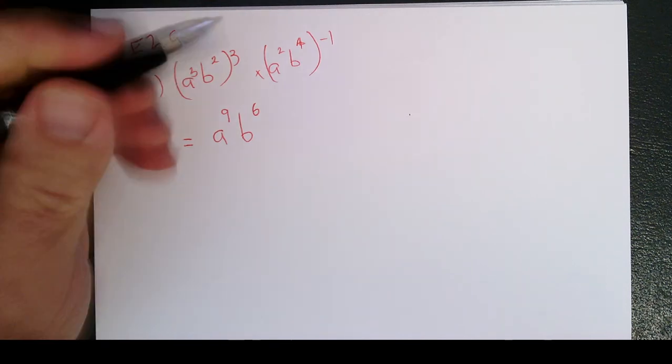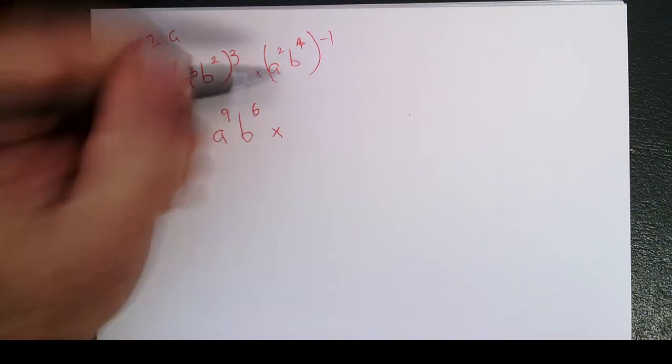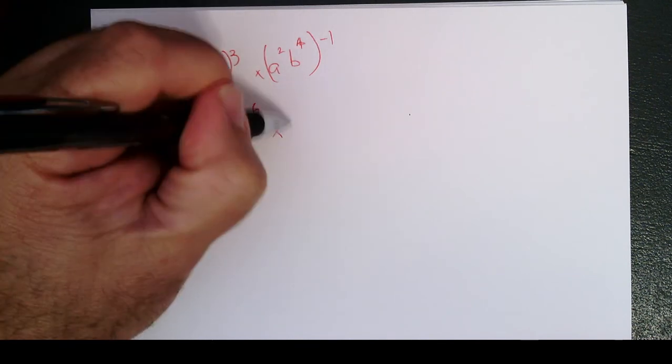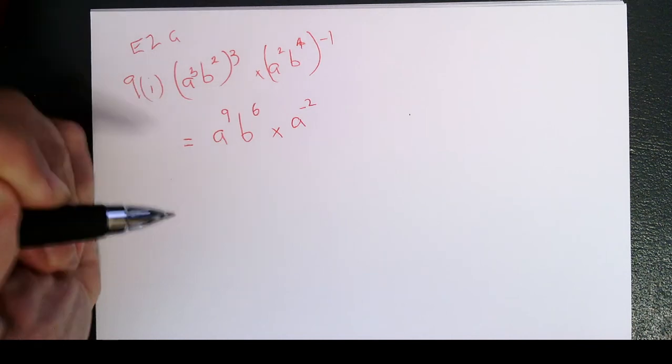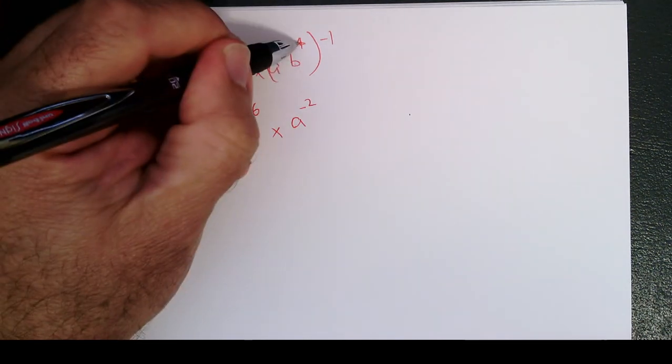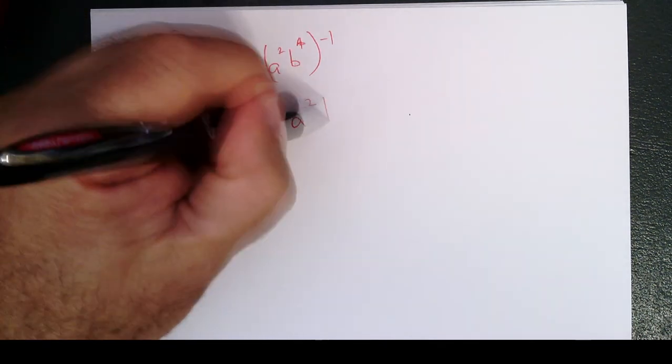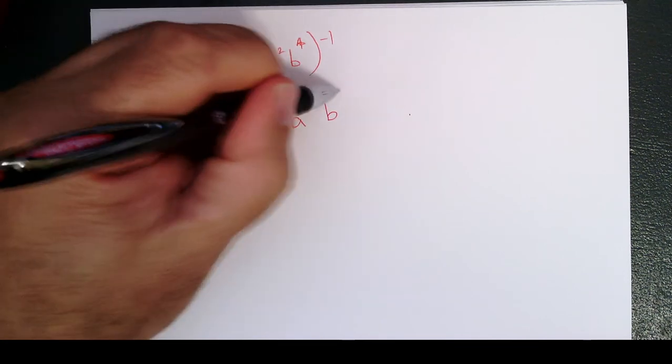Now moving over to this bracket. a squared to the power of negative 1. We multiply the powers, so it's a to the negative 2. And b to the power of 4 to the power of negative 1. Again, multiplying the powers, we get b to the negative 4.